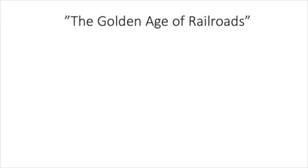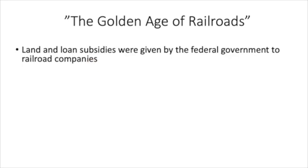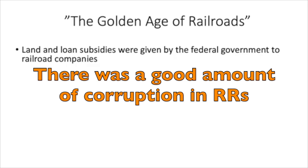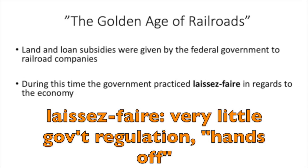Now, the first big business in this era was railroads. This period is oftentimes known as the golden era of railroads or the railroad age. As we discussed earlier, loans and land subsidies were given by the federal government to railroad companies, and as you can imagine, this led to a lot of corruption. During this time, the government practiced laissez-faire in regards to the economy, meaning very few restrictions and regulations. Businesses were basically free to operate any way they chose to maximize profit. This, of course, led to many problems.